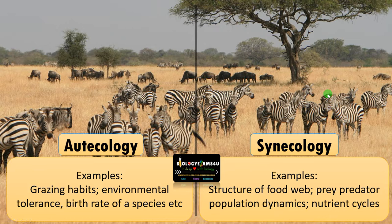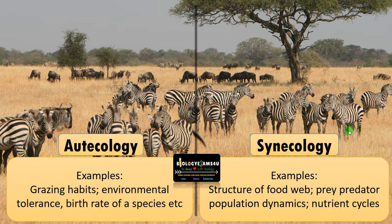Many species and complex interactions are involved in synecology, such as prey-predator relationships and population dynamics. For example, how the distribution of big cats in the African savanna affects prey populations like zebras, buffaloes, and wildebeest. Nutrient cycles and the study of the whole African savanna grassland ecosystem also fall under synecology. Synecology helps us understand core concepts like food webs and nutrient cycles, often focused on conservation aspects of an ecosystem.